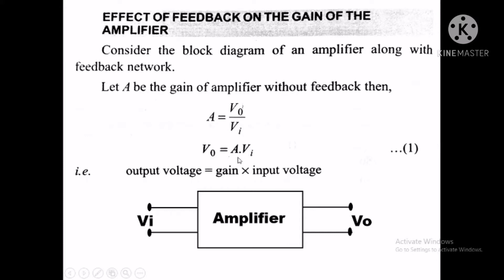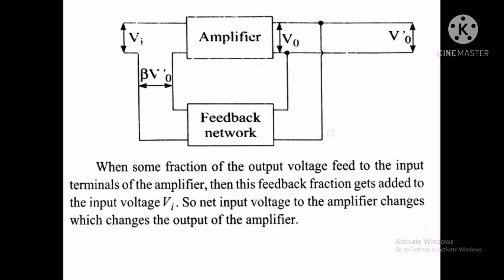Output voltage equals gain into input voltage. This is the formula for the gain of amplifier without feedback. Now we apply the feedback with the feedback network. The amplifier output is V0. When a fraction of output voltage is fed to the input terminals of the amplifier, this feedback fraction gets added to the input voltage Vi, so the net input voltage to the amplifier changes with the changes to the output.